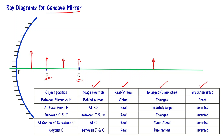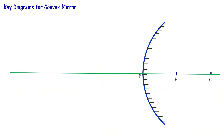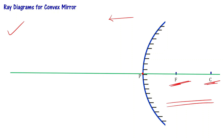For the case of the convex mirror also, we are going to do this, but the convex mirror's case is fairly simple. This side of the mirror is the reflecting side — the front side — and this is the back side. P indicates the pole of the mirror, F is the focus point, and C is the center of curvature. In the case of a convex mirror, we have focus and center of curvature behind the mirror, whereas in the case of a concave mirror, they were on the front side. This is one of the key differences to note.